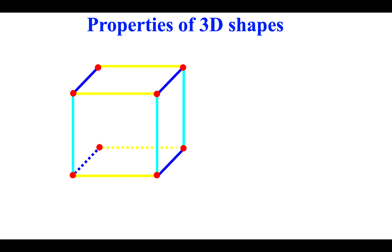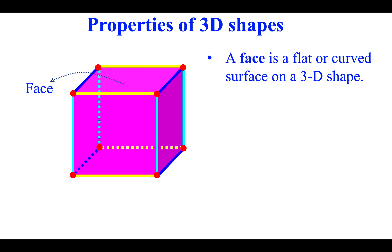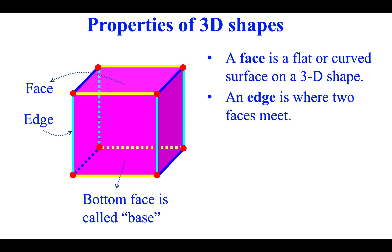Properties of 3D shapes. We are looking at a drawing of a cube. A cube is a typical example of a 3D shape. Face: A face is a flat or curved surface on a 3D shape. Bottom face is called base. Edge: An edge is where two faces meet. Vertex: A vertex is a corner where edges meet. Dashed lines show hidden edges.